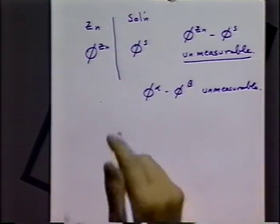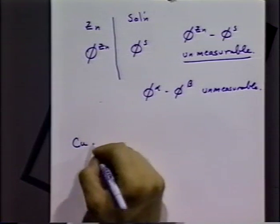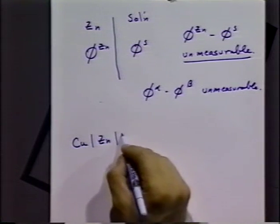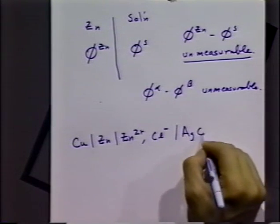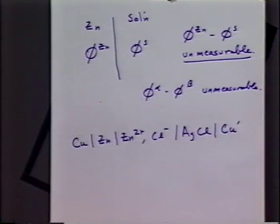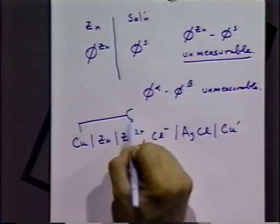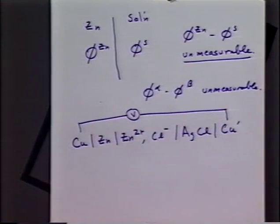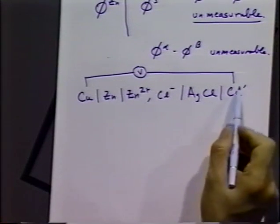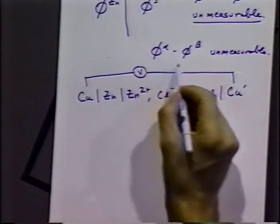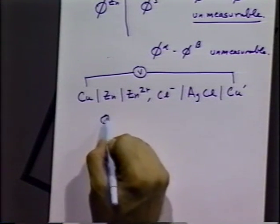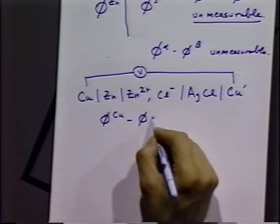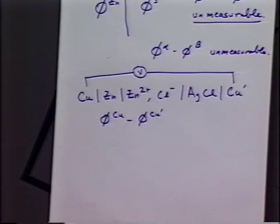So what is measurable in our systems? If we take a system where we have a copper voltmeter lead connected to our zinc electrode in solution with chloride ions and silver chloride and a copper wire, we could in fact measure the voltage in that system. That does not give us the interfacial potential — in fact there are a large number of interfacial potentials to consider in that particular case. What we have measured is the potential difference between the copper on one side and the copper prime on the other side.